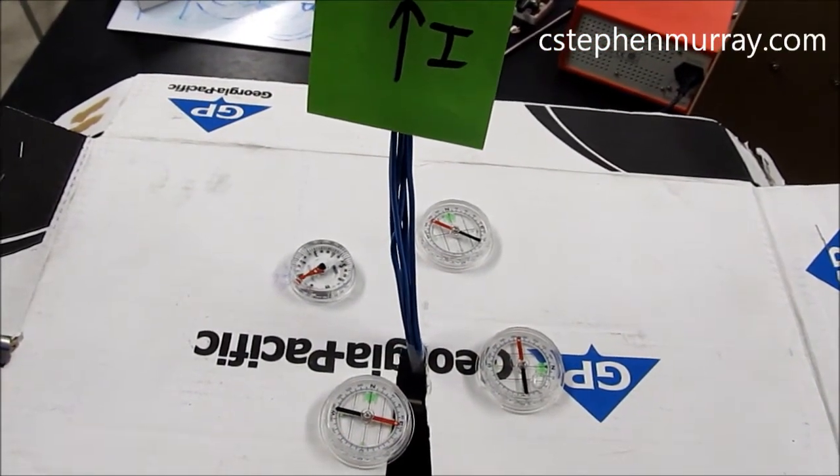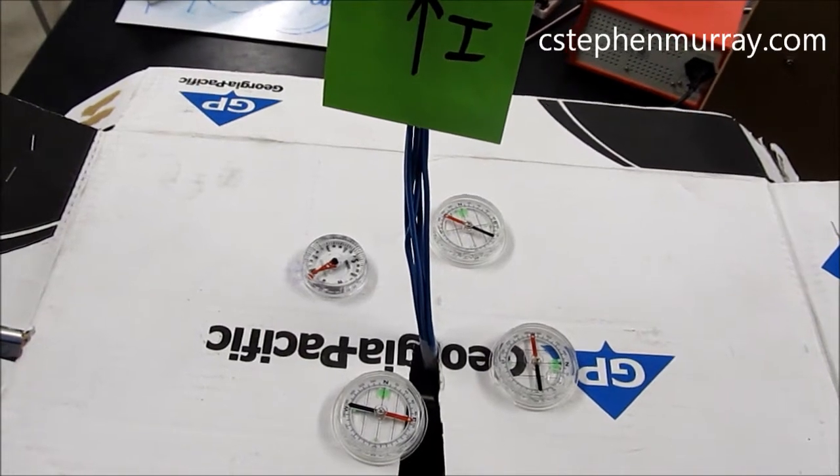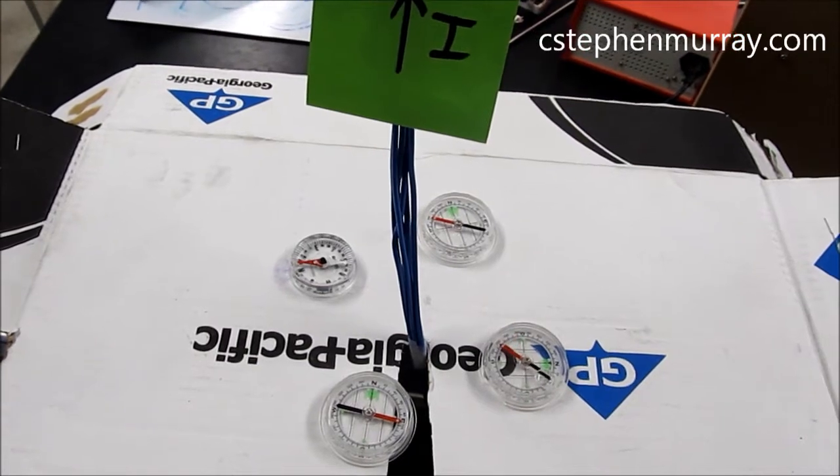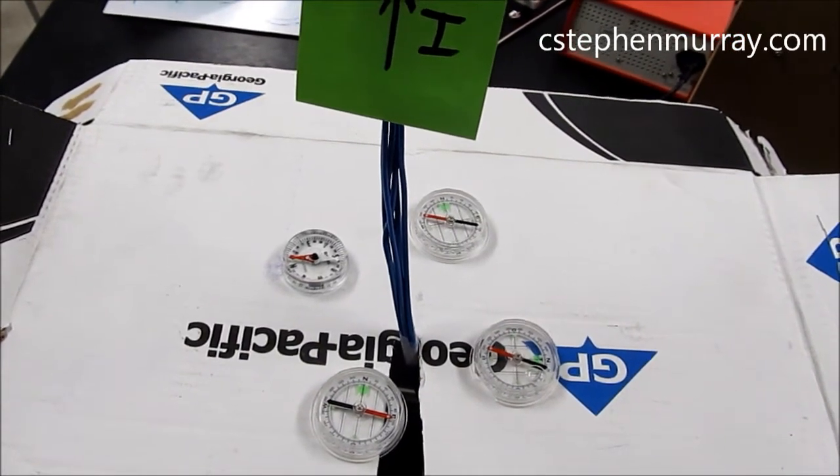Each of these compasses is tangent to the magnetic field lines. When I turn off the current, they eventually go back to north.